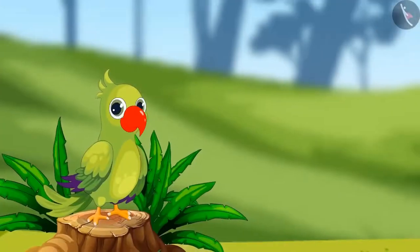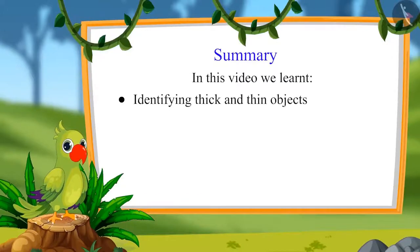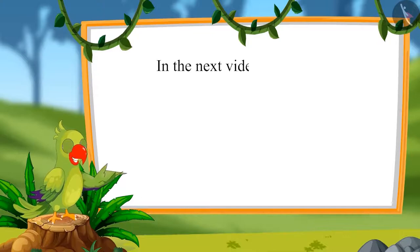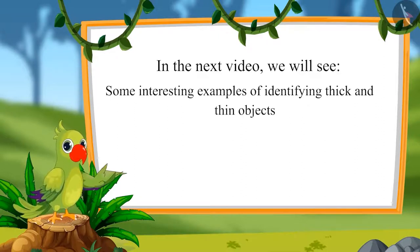So, children, Chotu could not hide behind the thin tree but could easily hide behind a thick tree. That was all for today. In this video, we learned identifying thick and thin objects and identifying thickest and thinnest objects. In the next video, we will see some interesting examples of identifying thick and thin objects. Till then, bye children.